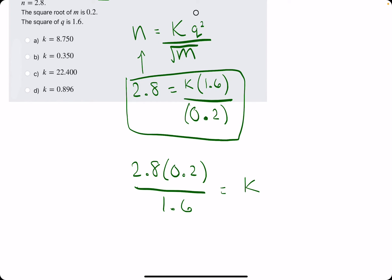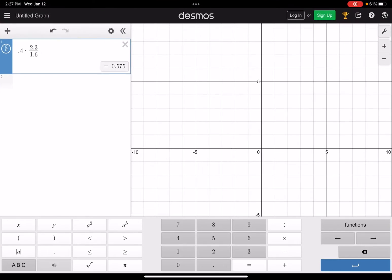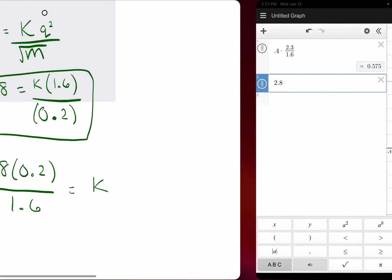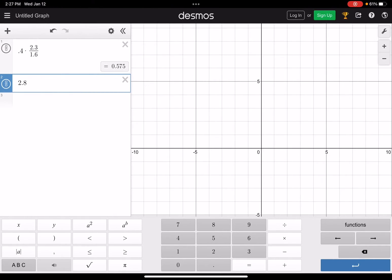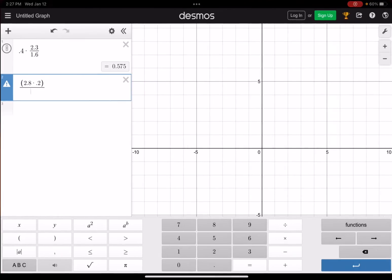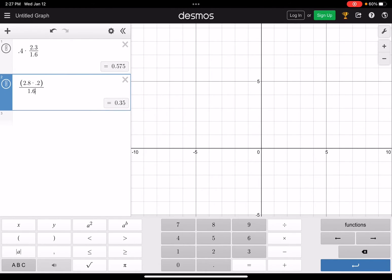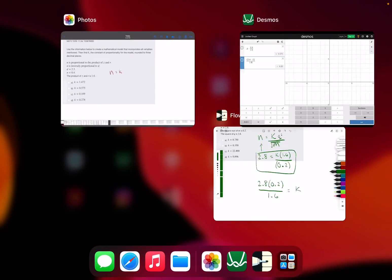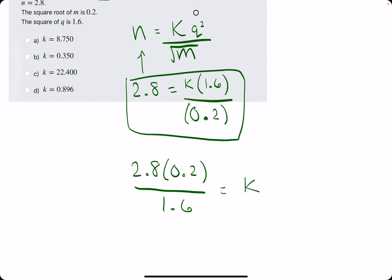and that will get k by itself. So we'll plug this into Desmos. 2.8 times 0.2, all divided by 1.6. And that will give us 0.35 for our k value.